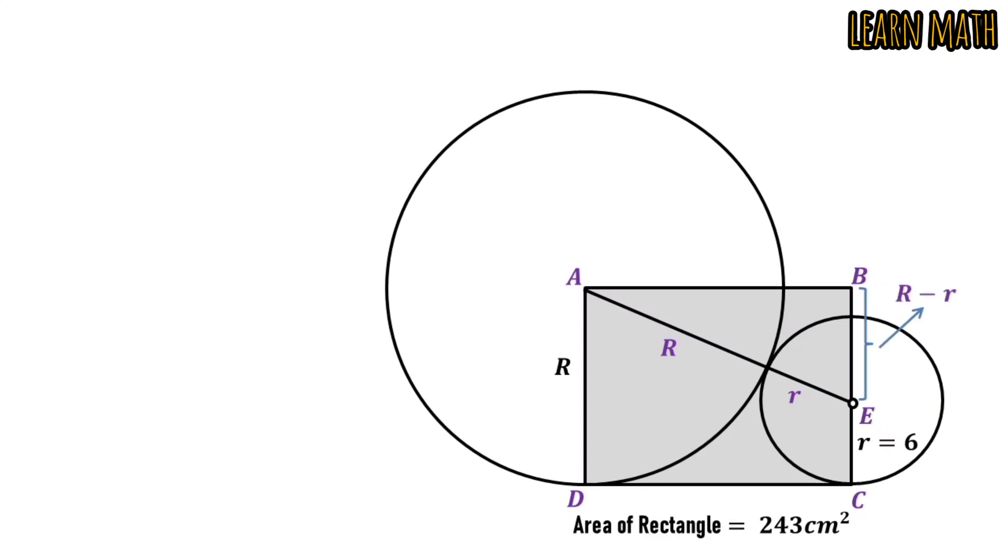Now, look at the figure. ABE is a right-angled triangle and by Pythagoras theorem, we can write AB² is equal to (R + r)² minus (R - r)².